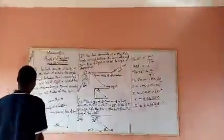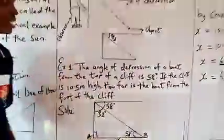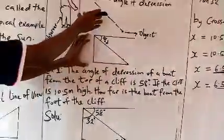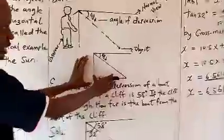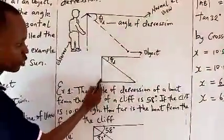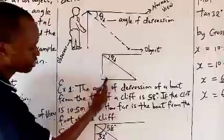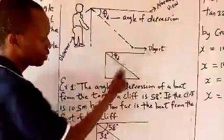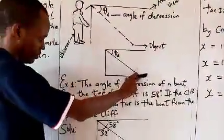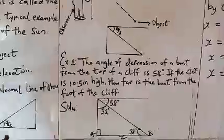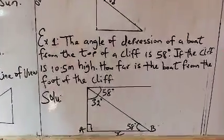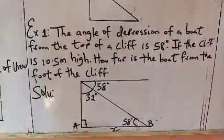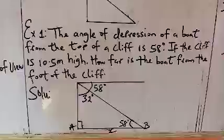Let's now look at the following examples. Example one is a mathematical model of the real-life situation. The angle of depression of a boat from the top of a cliff is 58 degrees. If the cliff is 10.5 meters high, how far is the boat from the foot of the cliff?